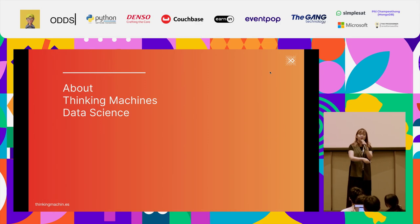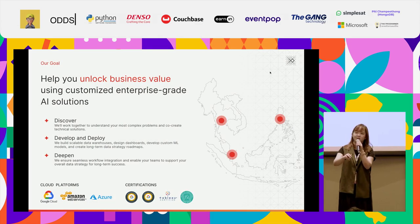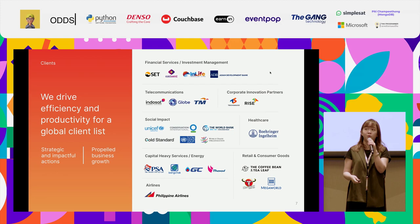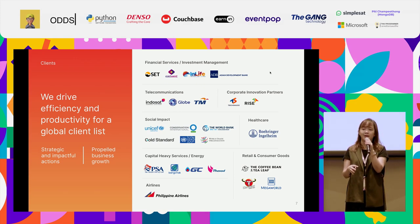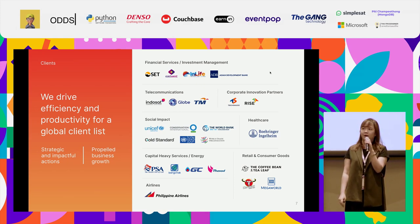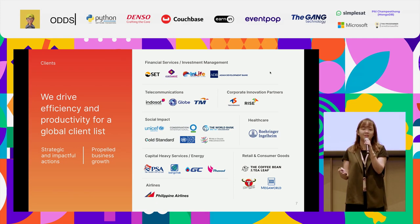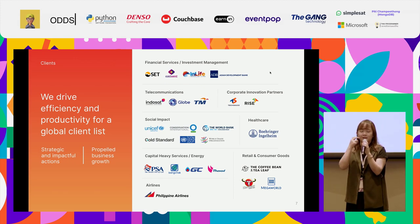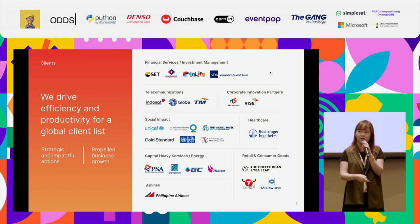A quick introduction on Thinking Machine: we're an international company focused on ASEAN, with offices in Bangkok, Singapore, and the Philippines — around 200 people. We work with local clients who want to develop AI and data platforms. Our work is very diverse — it could be LLMs, which are really hot right now, or predictions like forecasting oil prices. But today we'll focus on our work in the social impact sector.